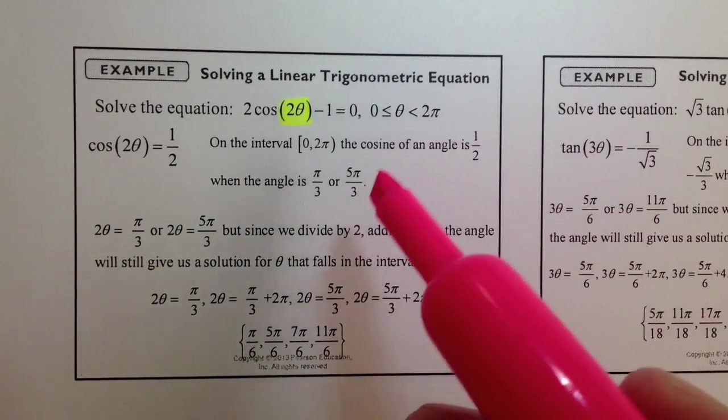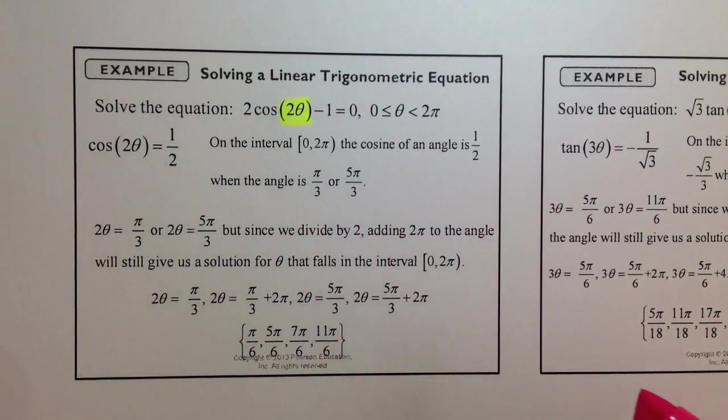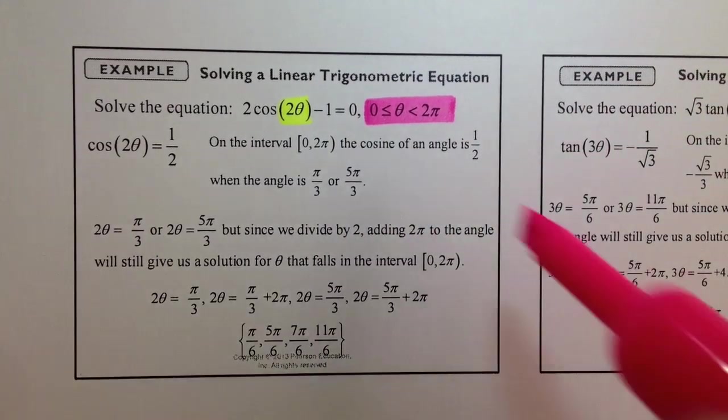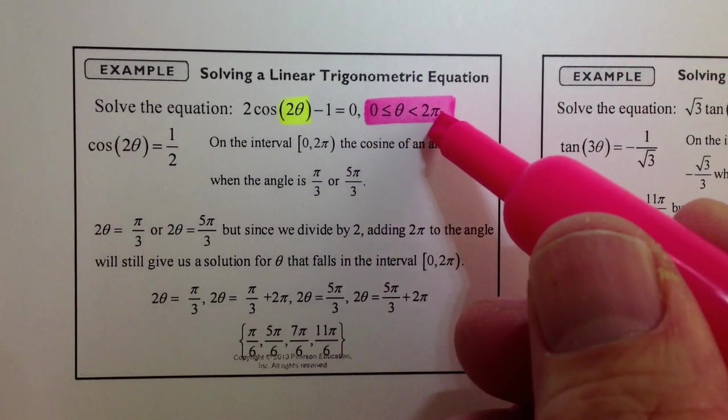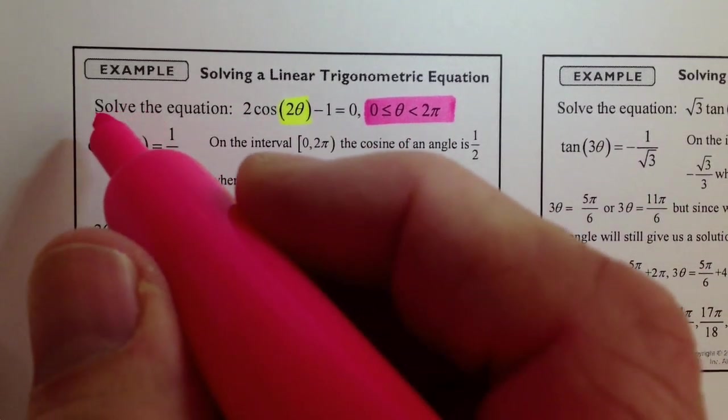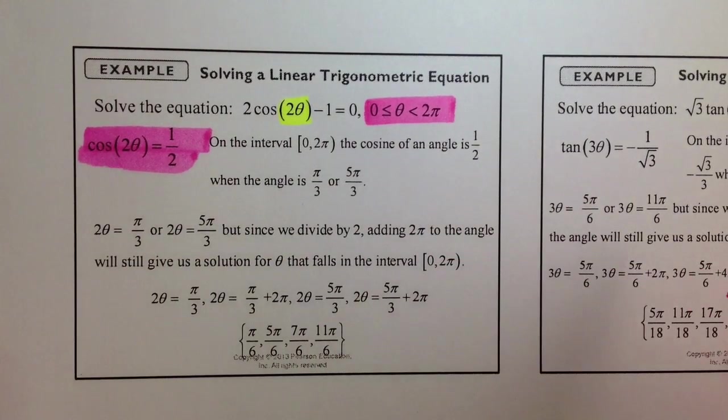we're solving an equation involving just one trig function, and we're going to solve this one only from 0 to 2 pi, including 0, but not including 2 pi. Adding 1 and dividing by 2 gives us this equation here.